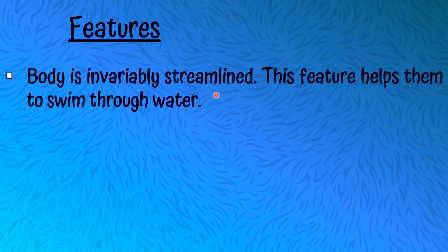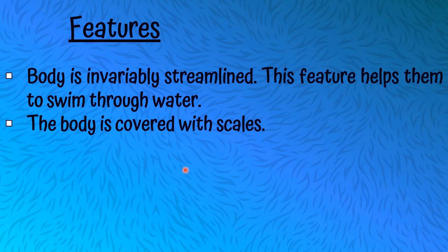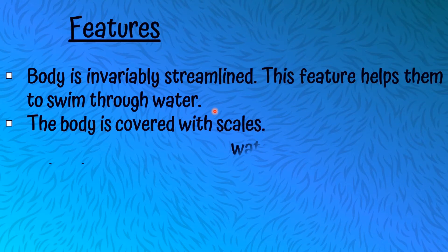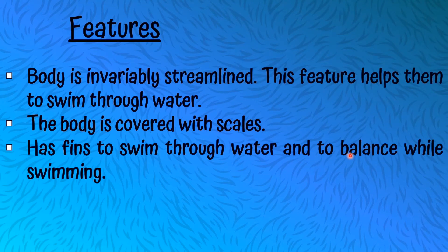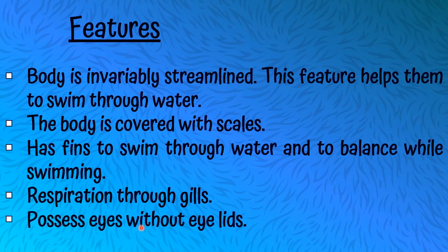Let's talk about the features of Pisces. The body is invariably streamlined — this feature helps them to swim through water. A streamlined body shape is like a leaf shape, which helps to swim through water. The body is covered with scales. They have fins to swim through water and to balance while swimming. Respiration is through gills. Pisces possess eyes without eyelids.